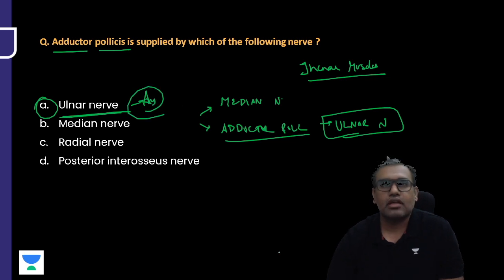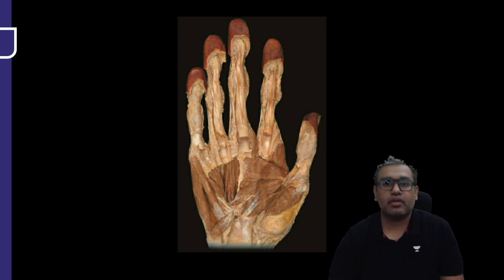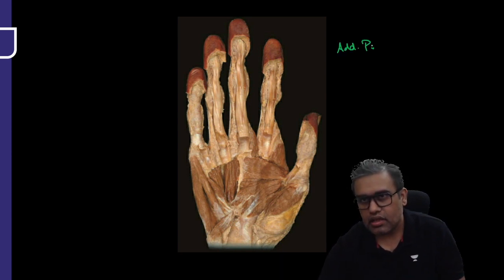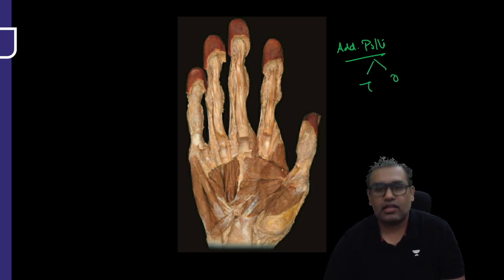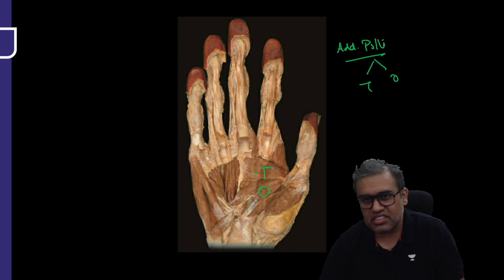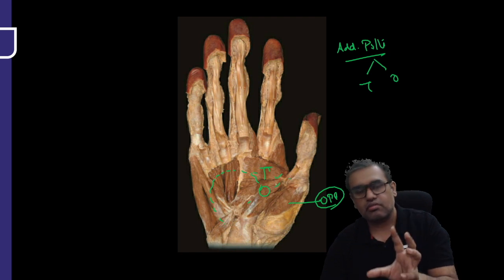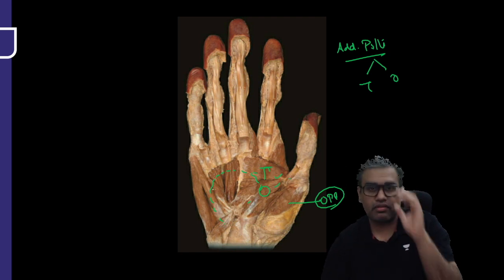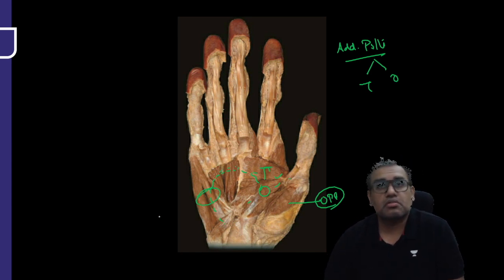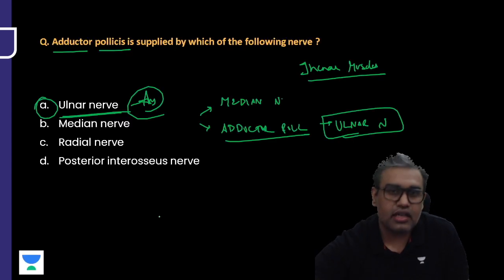Let me show you a cadaveric image to better understand this. Here are the muscles of the right palm. Here are the thenar muscles. Remember, adductor pollicis is having two heads: it has a transverse and an oblique head, coming from the second or third metacarpal. They insert into the first metacarpal and the proximal phalanx of the first digit only. These are the adductor pollicis and the ulnar will come from here and end by supplying this muscle. This area is for the opponens pollicis. Mind you, both adductor pollicis and the opponens are covered by the flexor and adductor pollicis. Here we have the hypothenar muscles. Adductor pollicis is definitely supplied by the ulnar without a doubt, that is a clear-cut answer.